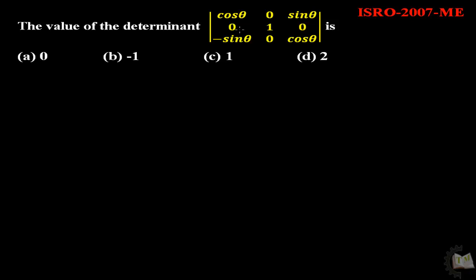For simplicity, I want to change this to a row. This row will go to this position, and this row will come to this position, according to the property of determinants. If you interchange any two rows or any two columns, then you have to multiply a negative sign in front of the determinant.